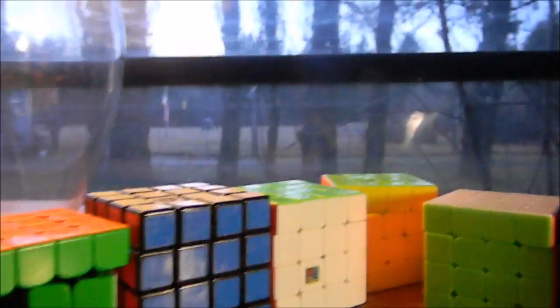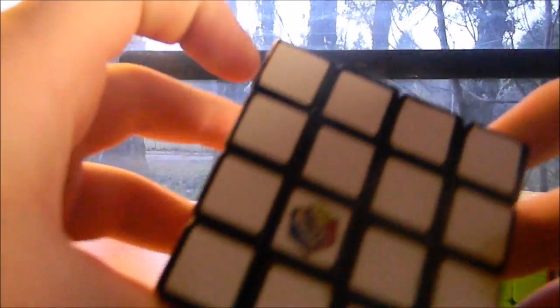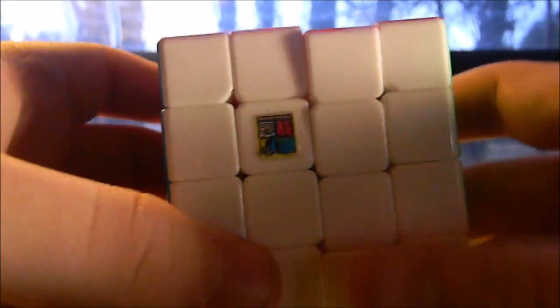So guys here we are with 4x4. Tax Olsen will be doing 4x4. We got the GAN 460 with a missing green tile. This is a Rubik's brand Rubik's Revenge 4x4. This is the MF4.